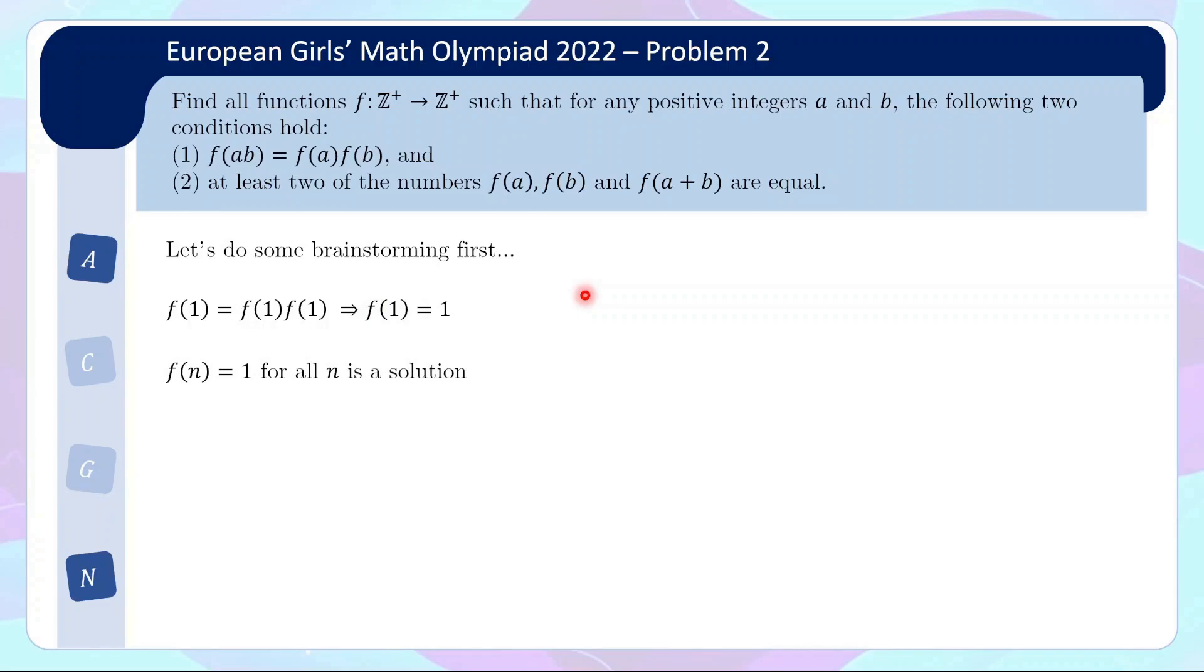So f(1) equals f(1) times f(1), which gives you f(1) equals 1. Now clearly you'll notice that the solution f(n) equals 1 is actually a solution, because this is 1 equals 1 times 1, and then obviously you pick any trio, there will be two that are equal. So this is clearly one solution. And the question is, are there other solutions out there?